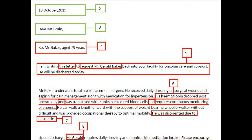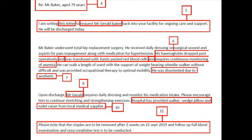Moving to the second paragraph: 'Mr. Baker underwent total hip replacement surgery. He received daily dressing on the surgical wound and aspirin for pain management along with medication for hypertension. His hemoglobin dropped postoperatively and was transfused with three units of packed red blood cells and requires continuous monitoring of anaemia.' This information is up to standard, but using two 'and' connectors in one sentence is not advised. A better version: 'His postoperative anaemia was corrected with the transfusion of three units of packed RBC and requires continuous monitoring,' which is more precise and concise.